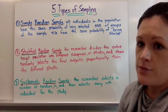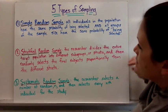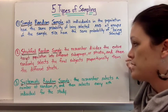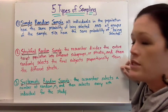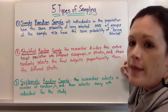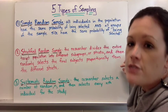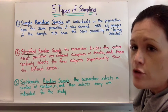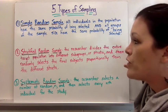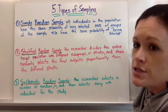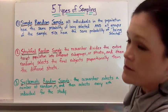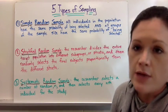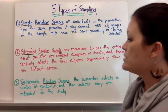A stratified random sample is when the researcher divides the entire target population into different subgroups or strata and then randomly selects subjects proportionally from each stratum. For example at a pep rally we could divide students into freshmen, sophomores, juniors, and seniors — those are different strata — and then choose people proportionally from each group, like selecting people from the front row of each group because they'd be easy to get out of the crowd.